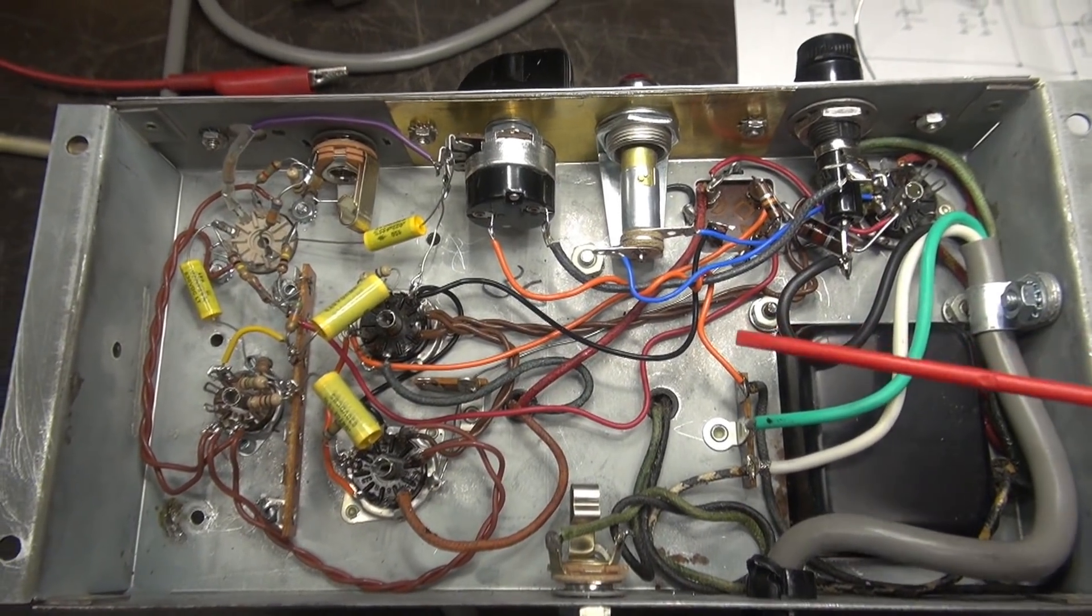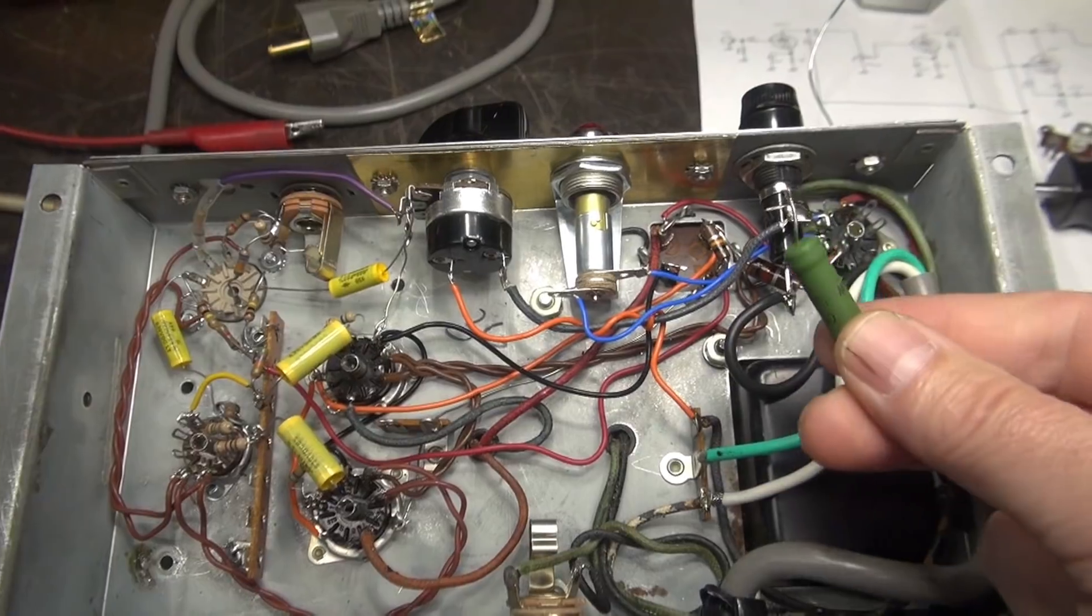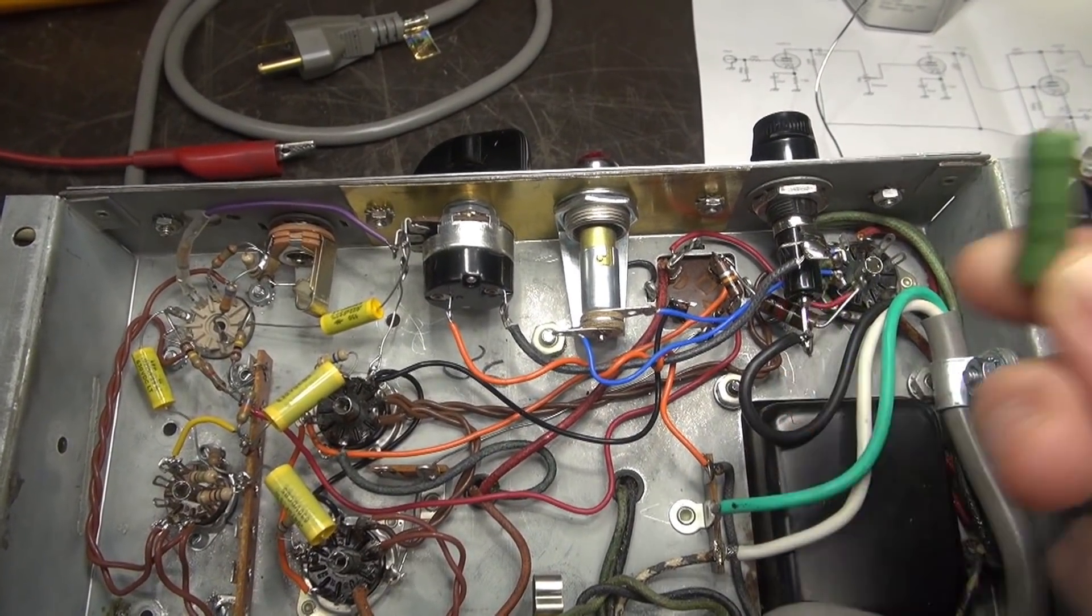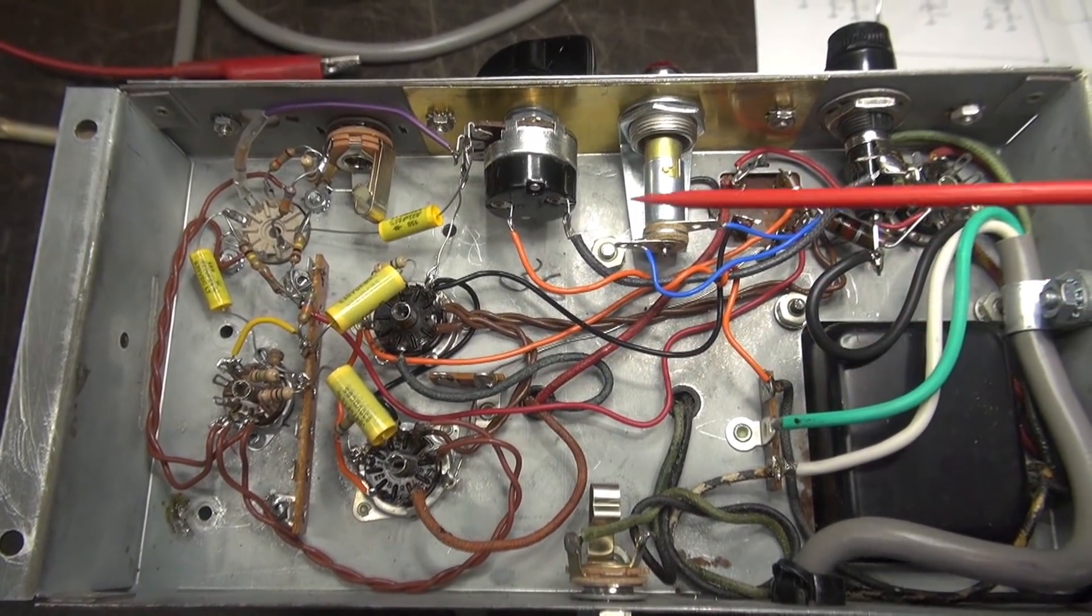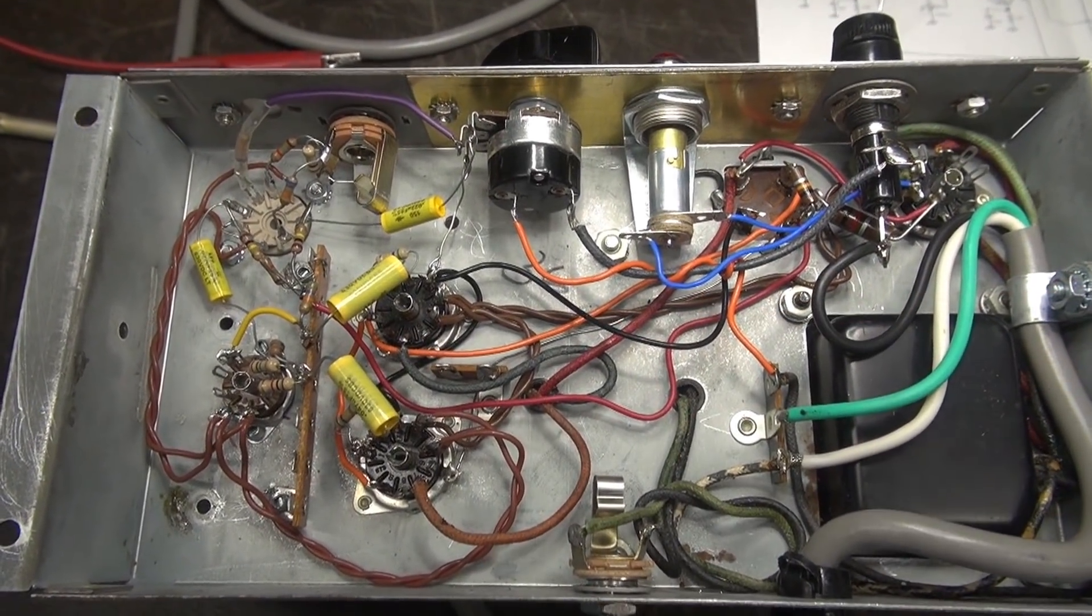Our wiring is complete, all except for the bias resistor. I'm not sure if this 130 ohm is right yet. So I'm going to get that hooked up and measure the current through the new 6BQ5 output tubes.